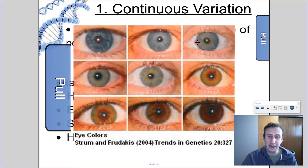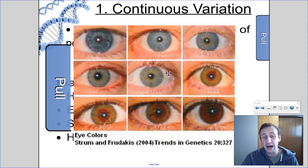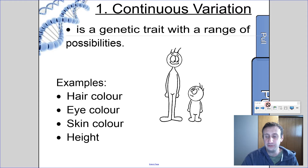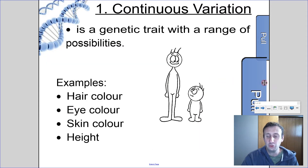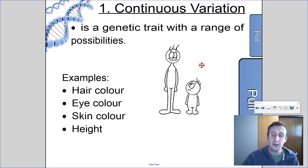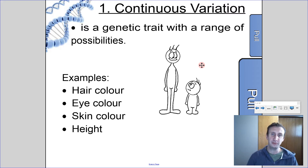Here's another picture showing different eyes — we can see all different kinds of eye colors, and again this is a continuous trait. Of course, that's influenced by the genes that you have; you get your eye color and your skin color from the genes your parents passed on to you. But the trait itself has a large spectrum of different options that are possible, and that's the idea behind a continuous trait.